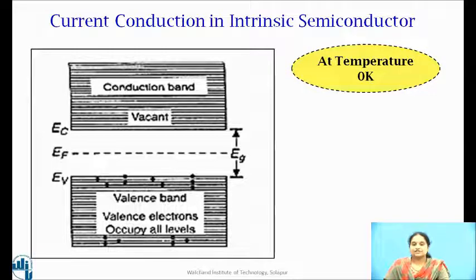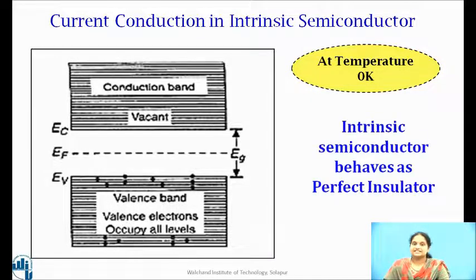As free electrons do not exist in the conduction band, externally applied electric field cannot cause flow of current through the crystal. Hence, an intrinsic semiconductor behaves as a perfect insulator at 0 Kelvin.